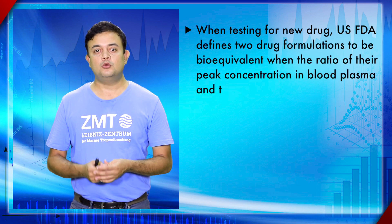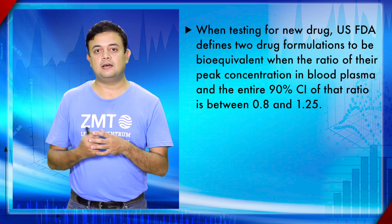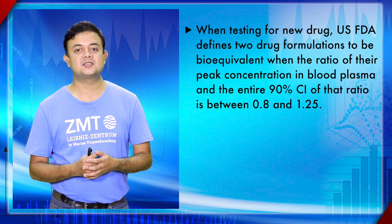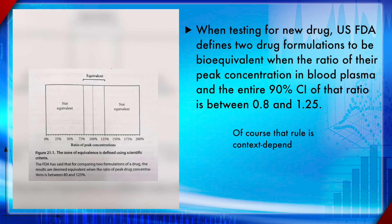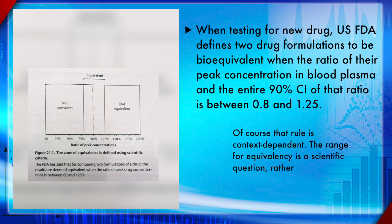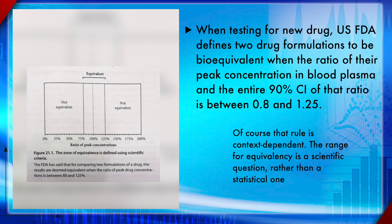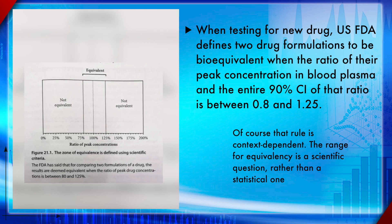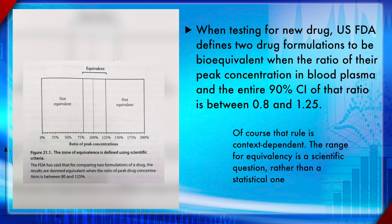When testing for a new drug, the United States FDA — the Food and Drug Administration — defines two drug formulations to be bioequivalent when the ratio of their peak concentration in blood plasma and the entire 90% confidence interval of that ratio is between 0.8 and 1.25.